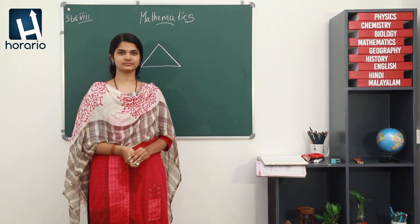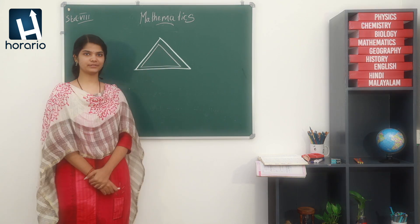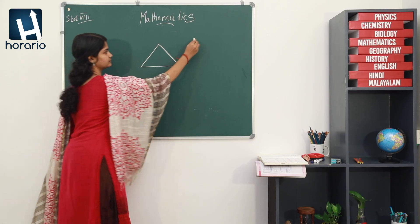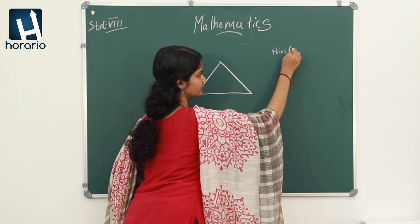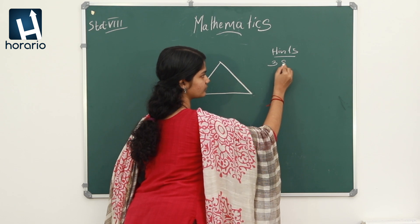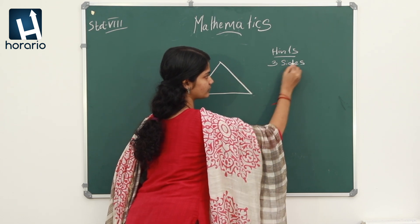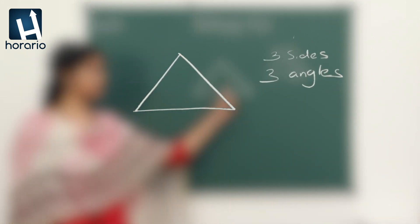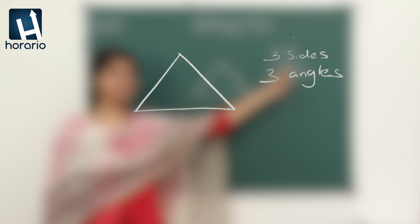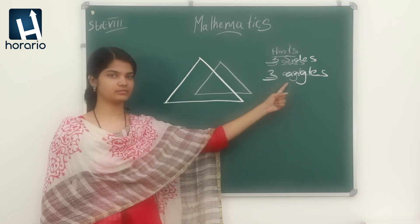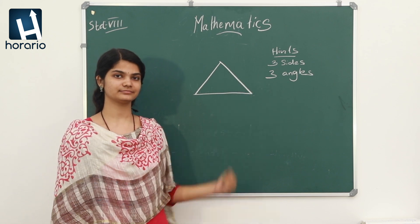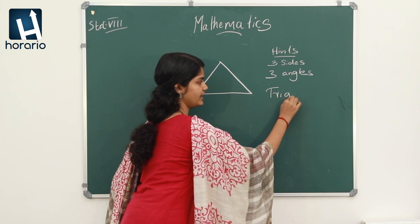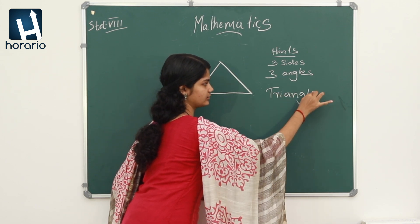Now students, can you identify this shape? Let me give you some hints. This particular shape has three sides and three angles. Then what is the name of this particular shape? Yes, it is a triangle.